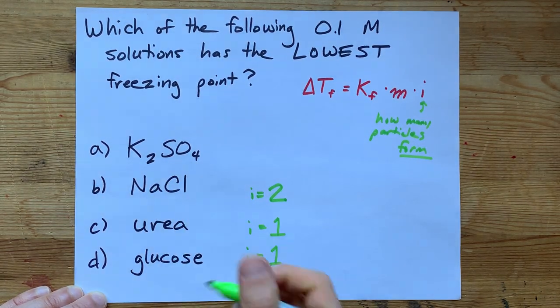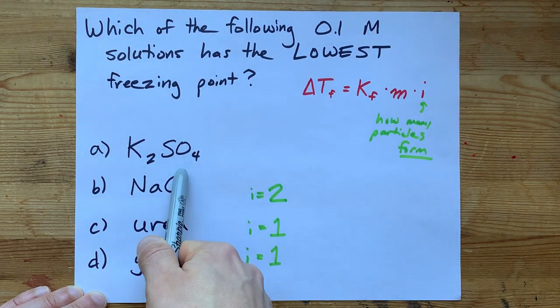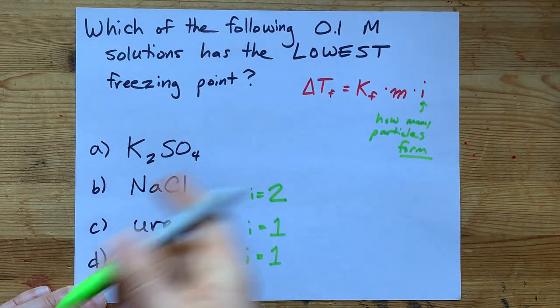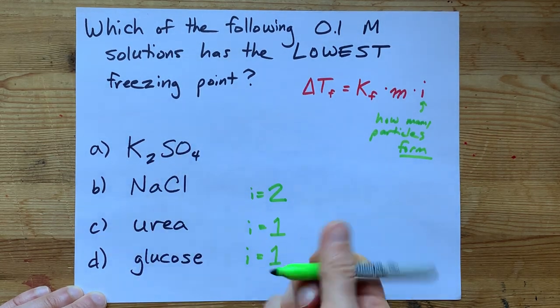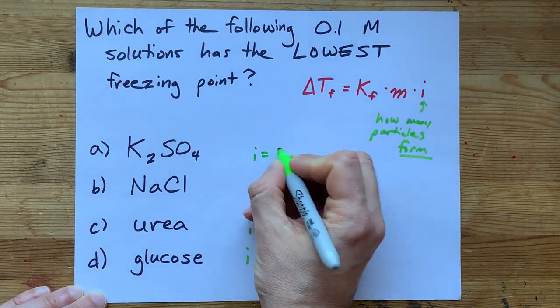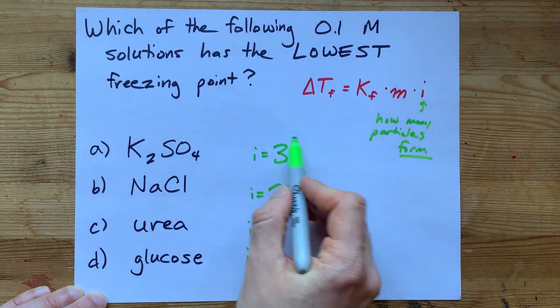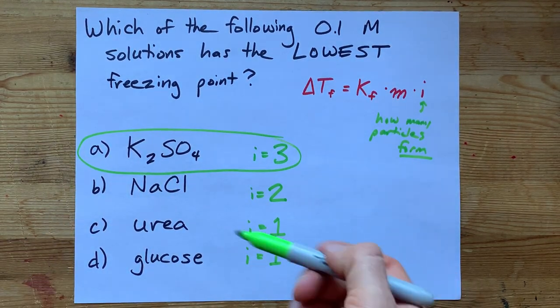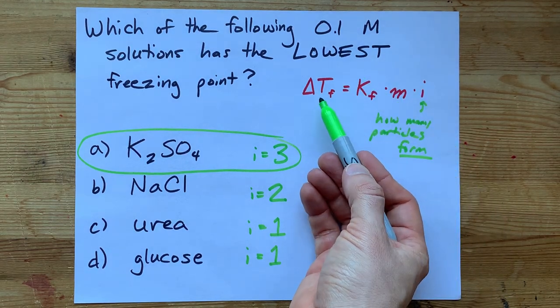But take a look at K2SO4. When you break this one up in water, you get two K+ ions and separately a sulfate anion. That is three ions. And so this one has the highest Van't Hoff factor, therefore the highest freezing point depression.